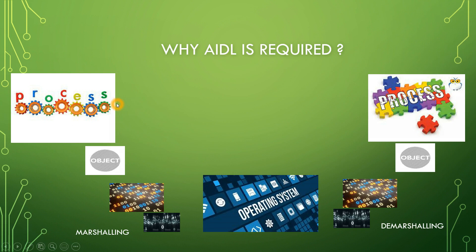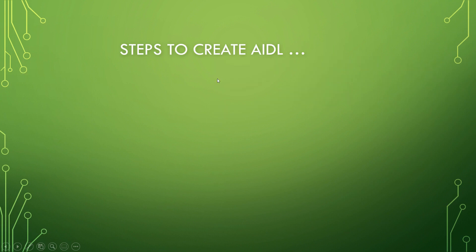AIDL will auto-generate all the important primitive types for us so that we can communicate easily from the client to the server, or from one process to another process. Now, what are the steps to create an AIDL? There are three different steps basically to create an AIDL.